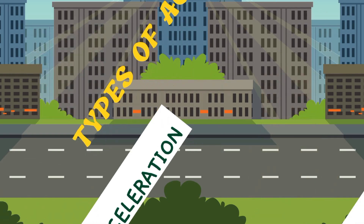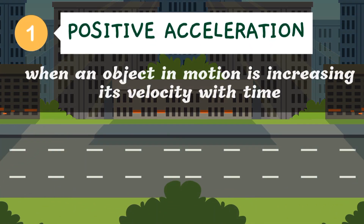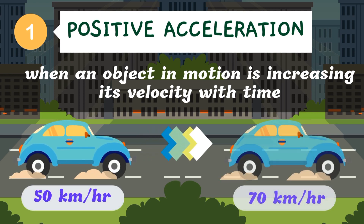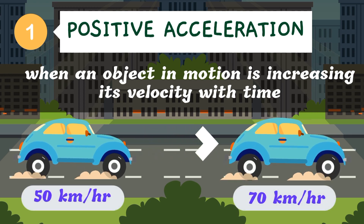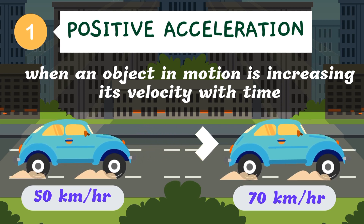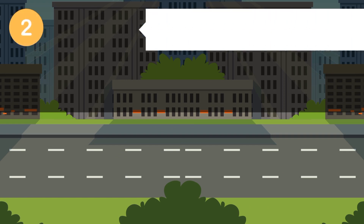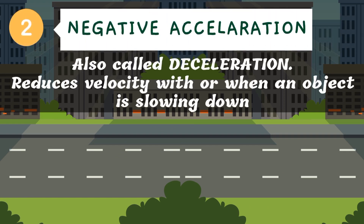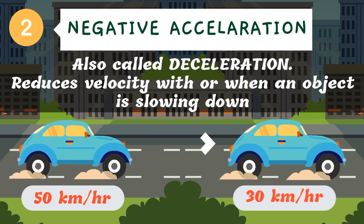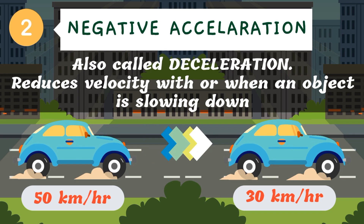Now, there are two types of acceleration. First, we have positive acceleration — it happens when an object in motion is increasing its velocity with time, meaning the speed is speeding up or increasing. Next, we have negative acceleration, or what we call deceleration. It reduces velocity with time, or it happens when an object is slowing down.